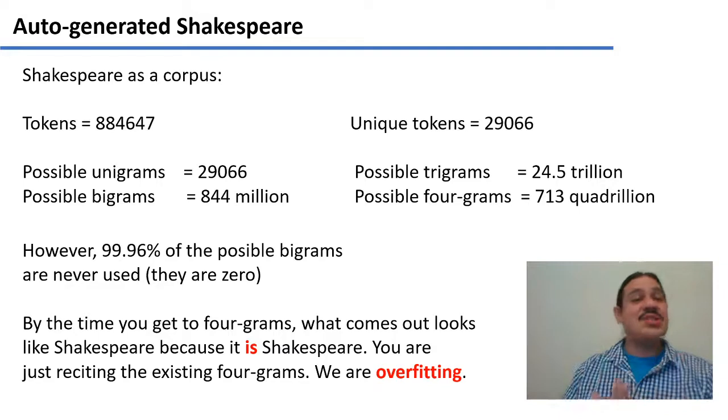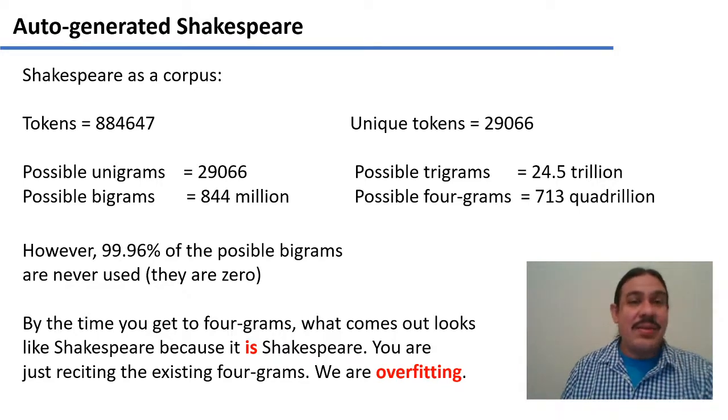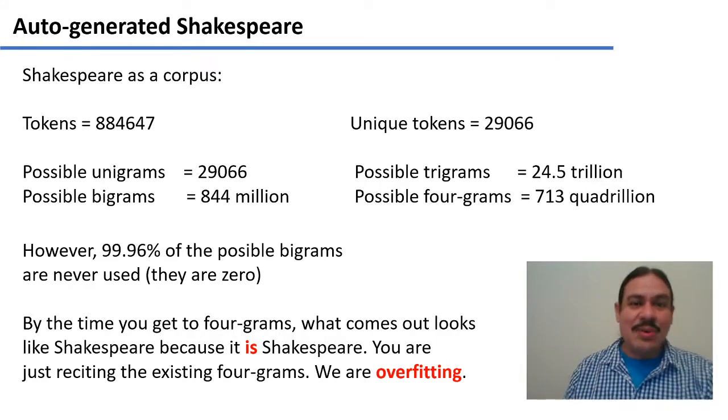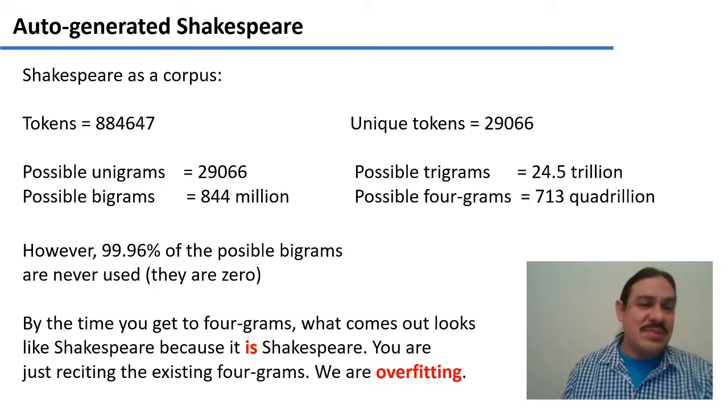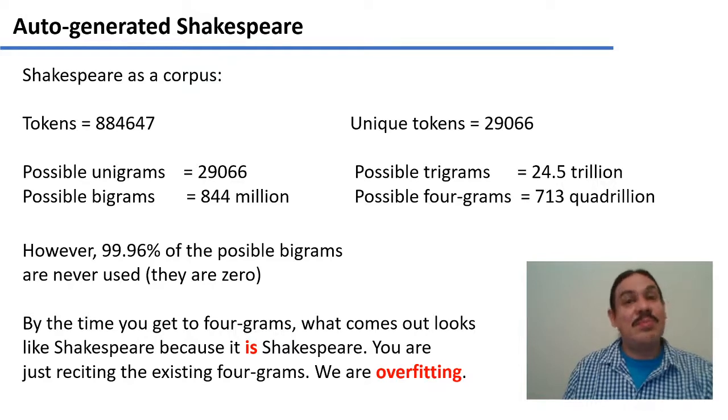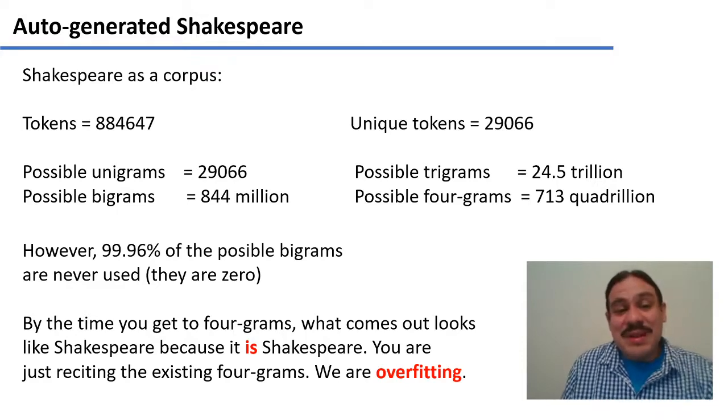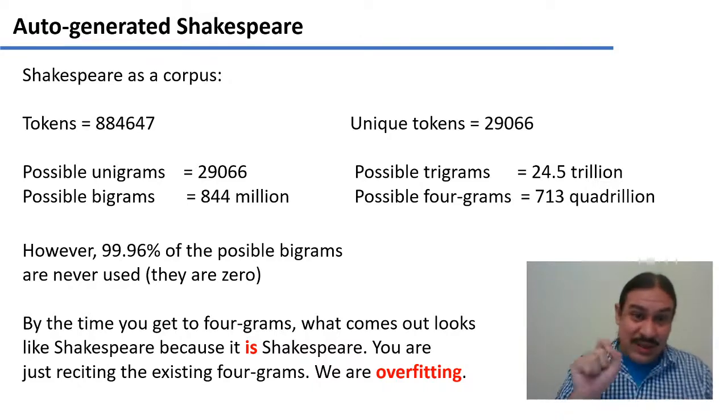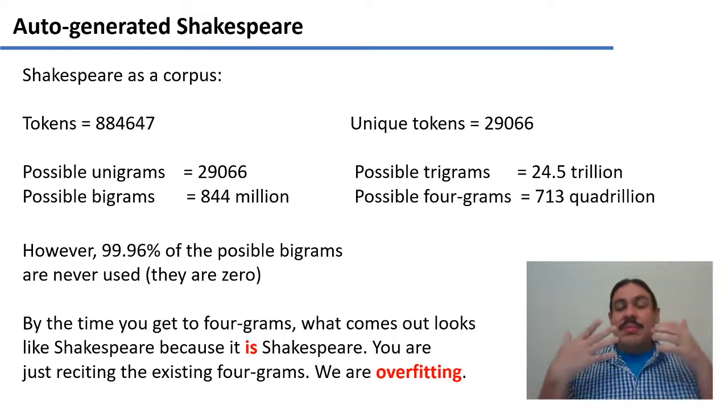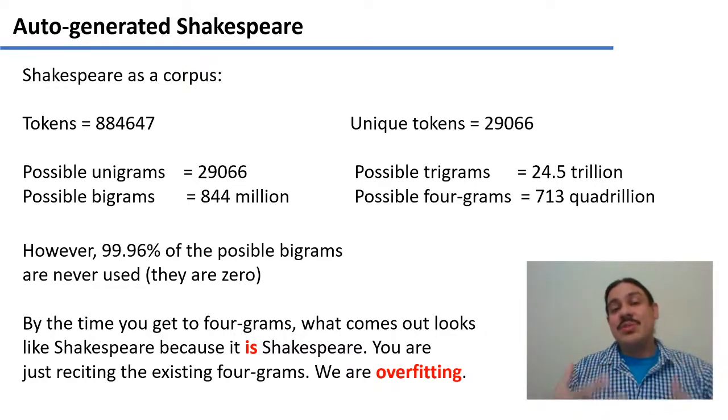There's a danger in going to have more and more n-grams. Let's take Shakespeare. Shakespeare has about 884,000 tokens in total. It has about 29,000 unique tokens. Those could be our unigrams, 29,000. If you have 29,000 unigrams, you could have 844 million possible bigrams. You could have 24.5 trillion trigrams, and you would have 713 quadrillion four-grams. That is a monstrous amount. However, most of them are zero. 99.96% of the bigrams are zero, because there's many words that never appear next to one another.